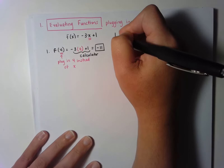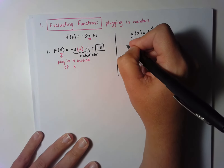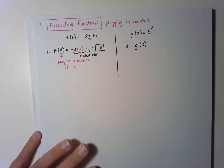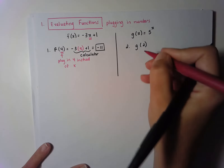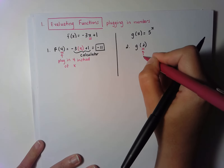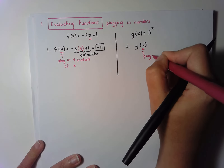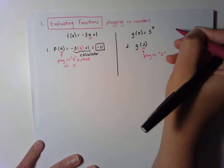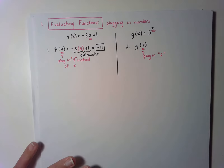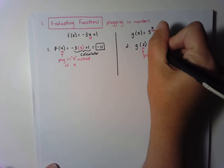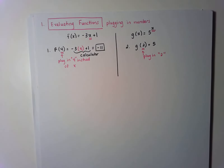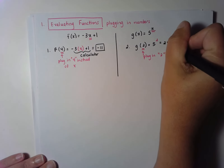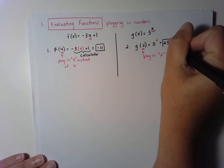As a second example, let's say that I ask you to find g of 2. For finding g of 2, all I would do is plug in the number 2 instead of the x. So in the g of x equation I would replace the x with the number 2, which means I would get 5 to the second power, which is going to be 25, and that would be my final answer.